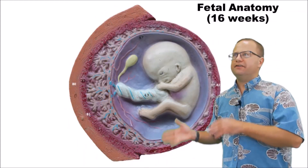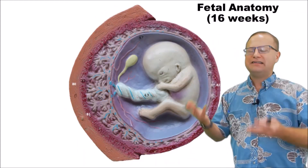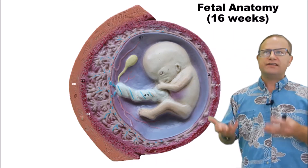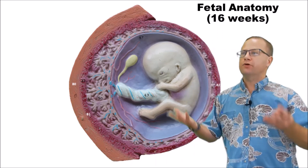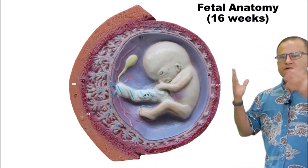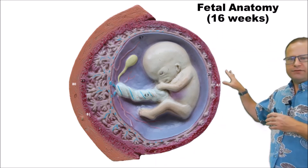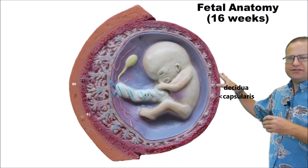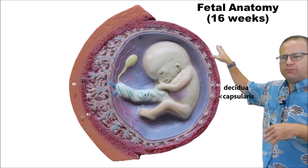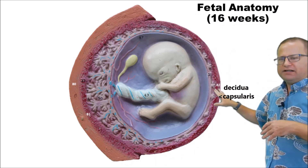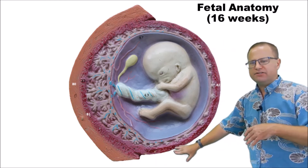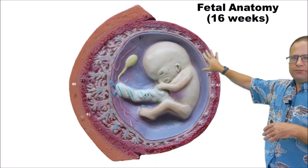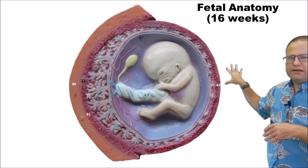Now we can take a look at the fetal period. We're not going to spend much time here because we've already laid down the basic body plan during the embryonic period. What's going to happen now in the fetal period is simply growth and development of these organs and organ systems. This structure right here is called the decidua capsularis — we saw it several slides ago as a little scab that formed over that blastocyst, but now it's the part of the maternal reproductive tract that is covering and protecting that amnion, bulging into the lumen of the uterus.